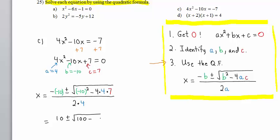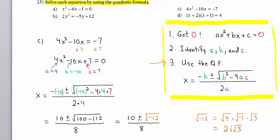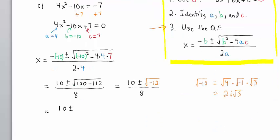4 times 4 is 16, times 7 is 112, divided by 8. We have 10 ± √(-12), all divided by 8. Let's simplify the square root of -12. The largest perfect square factor of 12 is 4. So we have √4 times √(-1) times √3, which equals 2i√3.